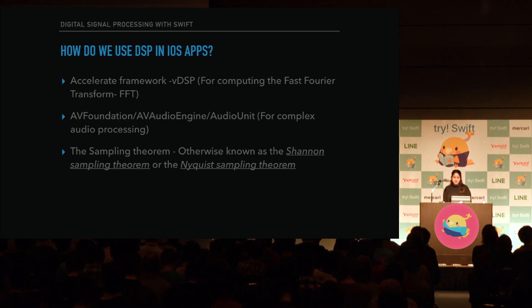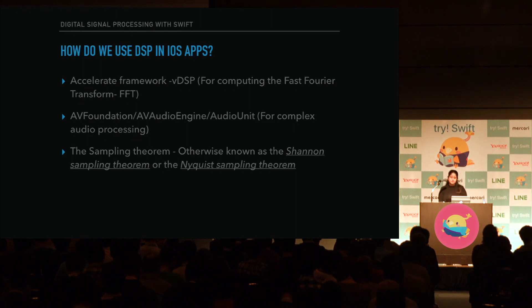Nyquist says that if we have 4000 kHz as our highest frequency in our band-limited channel, we'd have to sample at least twice the frequency that it is to get all the fidelity and avoid any aliasing. At this rate, we have a much better chance of getting a quality sound.